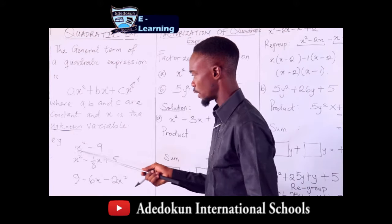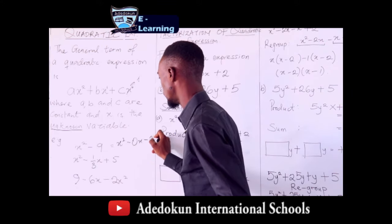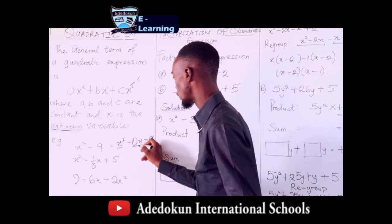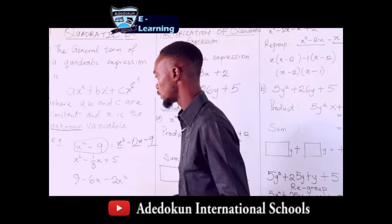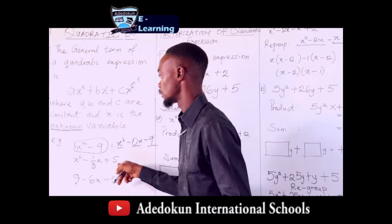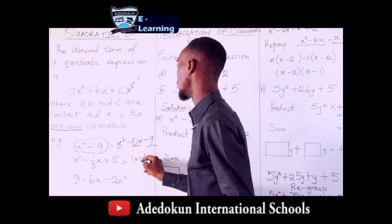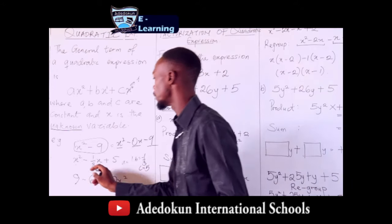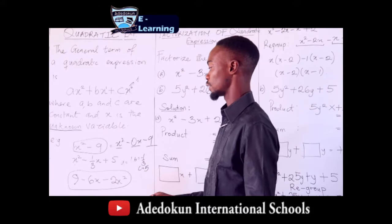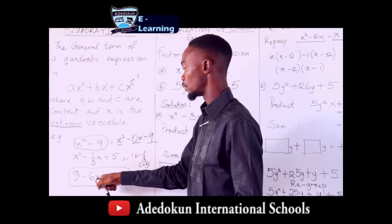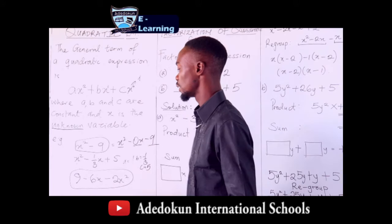Let's look at examples of quadratic expressions. Take x² minus 9 — this is the same as x² minus 0x minus 9, so it still has order two, order one, and order zero terms. Also, x² minus one-third x plus 5 is a perfect example where a is 1, b is minus one-third, and c is 5. The arrangement of the terms does not really matter; as long as the highest power of the unknown is two, it is a quadratic expression.